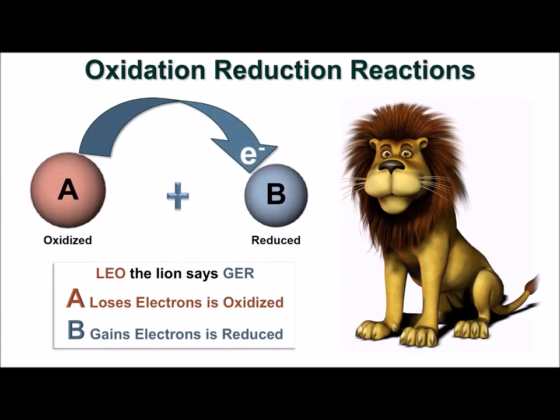The final reaction we'll be looking at is an oxidation-reduction reaction, commonly called a redox reaction. Before we continue, we need to understand some terminology about this reaction type. Oxidation is the loss of electrons, and reduction is the gain of electrons.